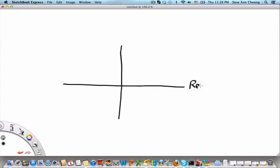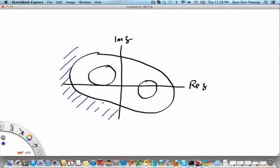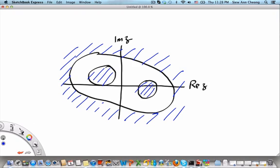Okay, so this is the real part of z and this is the imaginary part of z. Let's say that we are dealing with another function f of z. So the analytic region will look something like this. So it is not analytic out here, but it is also not analytic in here.